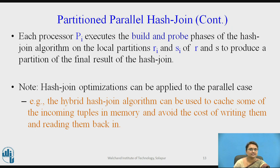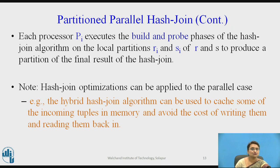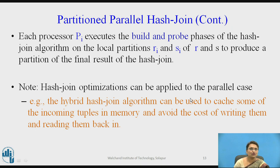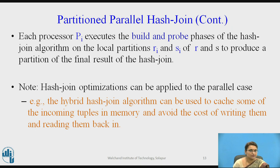Every processor pi executes the build and probe phases. In the build phase, relation s is partitioned based on h1. In the probing phase, the same partition is used for the next step. Hash join optimization can be applied in parallel cases using the hybrid hash join algorithm, which caches some incoming tuples in memory to avoid the cost of writing them to disk. The second-level partitioning is done in memory, and after the join operation, results are sent back to disk.